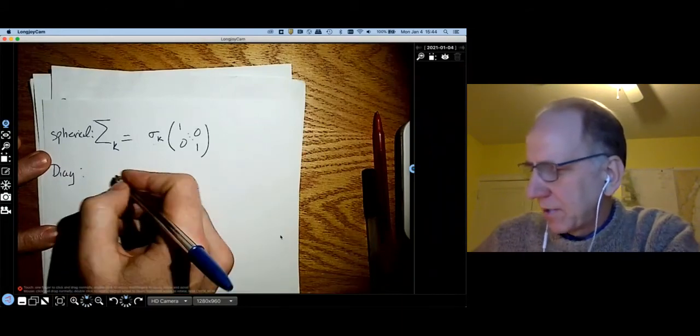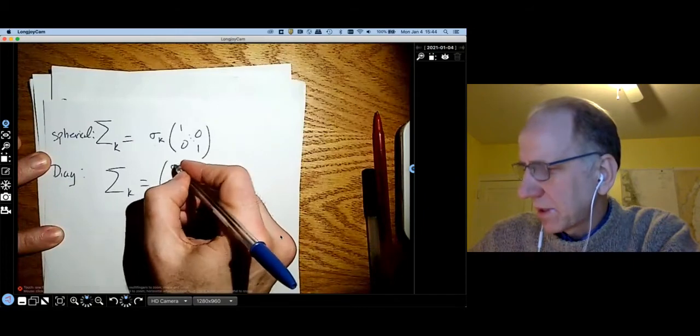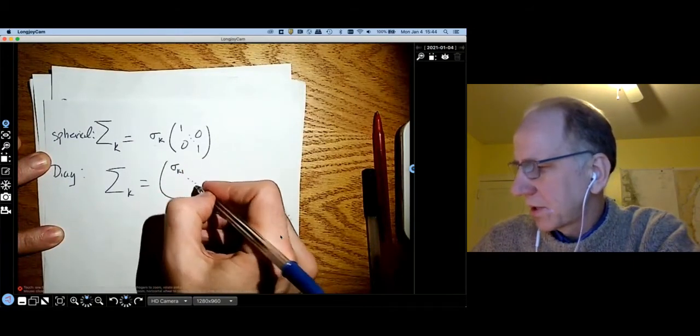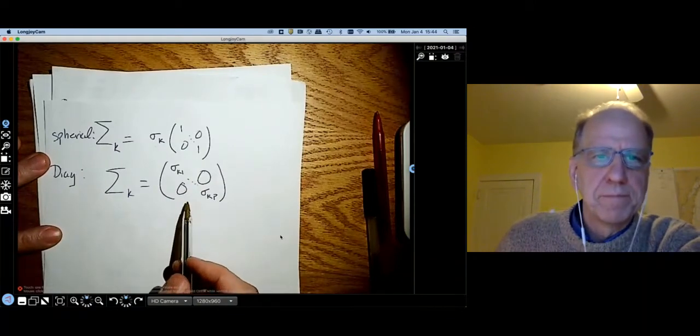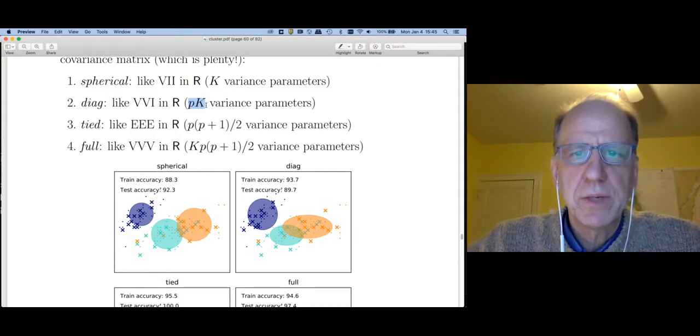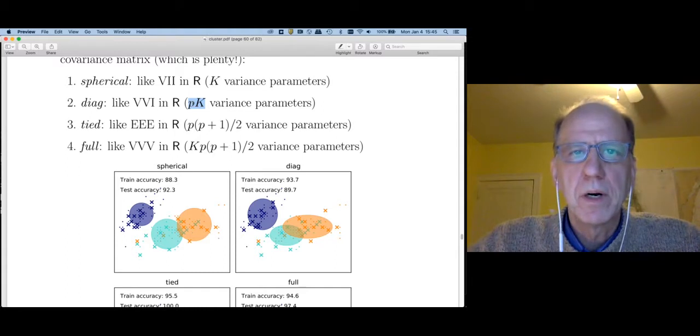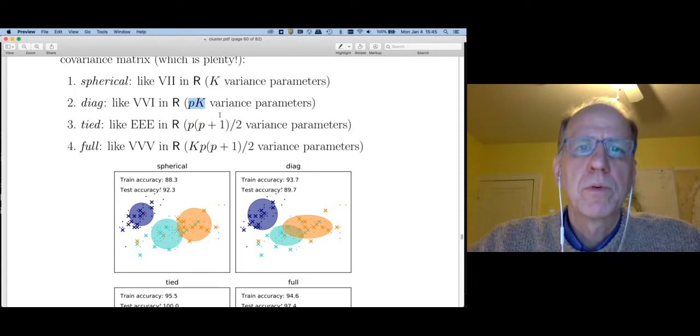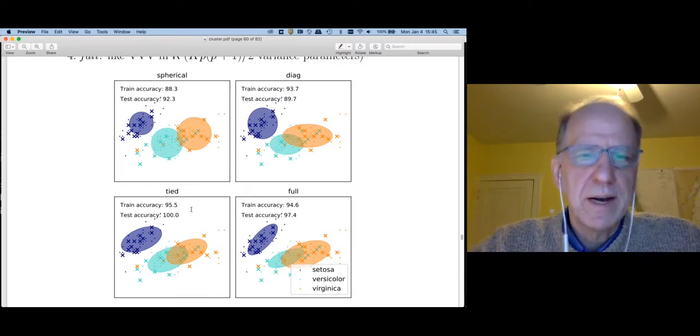Diag is going to look something like this. Sigma sub k is going to be sigma k1 through sigma kp, and we're going to have zeros off the diagonal. So the total number of variance parameters that you're going to have to estimate will be however many clusters you have k times the number of dimensions that you have p. So the number of parameters will grow linearly with both p and k.